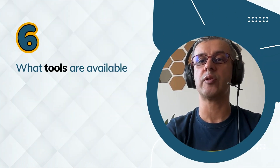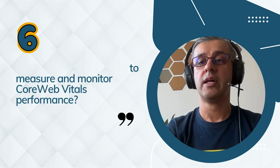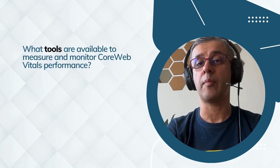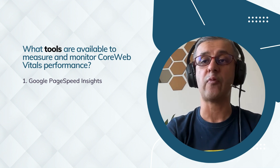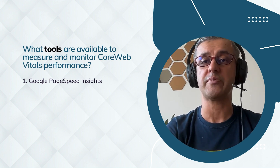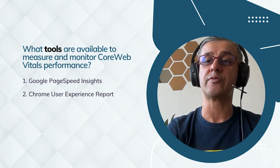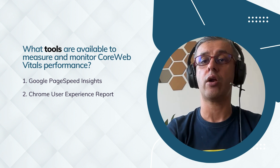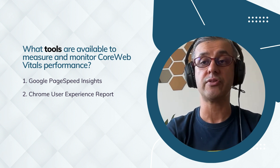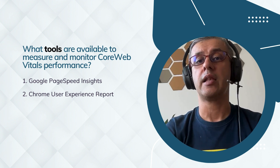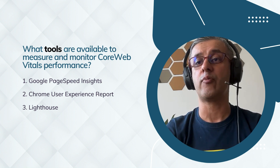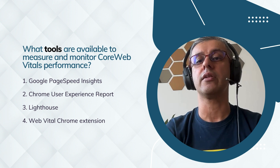The next question is: what tools are available to measure and monitor Core Web Vitals performance? This is an ever-growing space where you will see many more tools coming in, but the ones we use and recommend are: number one, Google PageSpeed Insights, which provides performance analysis for your website and Core Web Vitals; number two, the Chrome User Experience Report, which offers real-world data on how users are experiencing your site; number three, Lighthouse for an in-depth audit and improvement suggestions; and finally, the Web Vitals browser extension for real-time metrics.